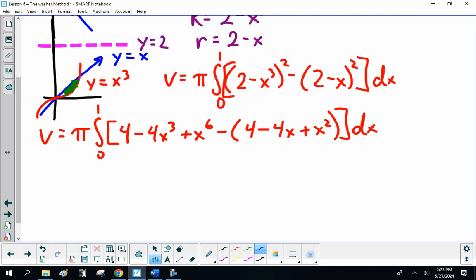Now. Do I get lucky and stuff cancels out? Yes. 4 and 4. And... Nope. Nothing else cancels out.